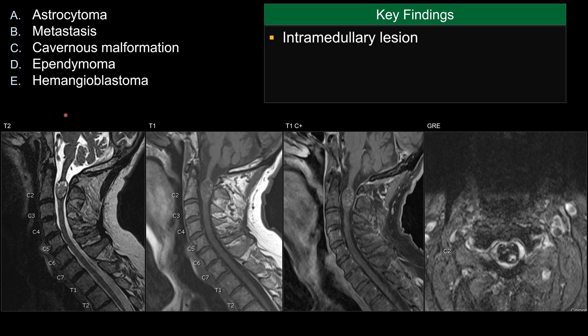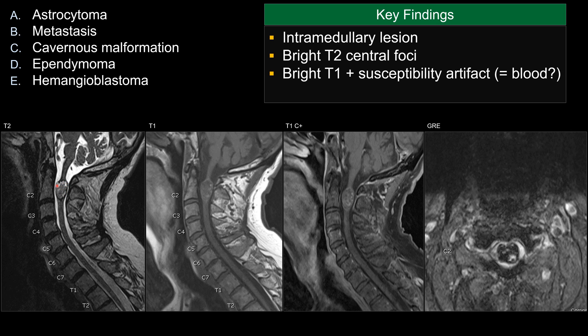Let's go over some of the key imaging features here. You can see there's an expansile intramedullary lesion at the level of C2 that is bright on T2, with multiple lobulated T2-bright centers. On T1-weighted sequence before contrast, there are multiple T1-bright foci within, and there is corresponding susceptibility artifact involving most of the lesion, representing blood product, calcification, or both.